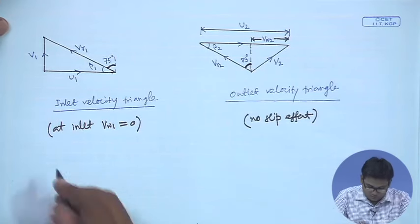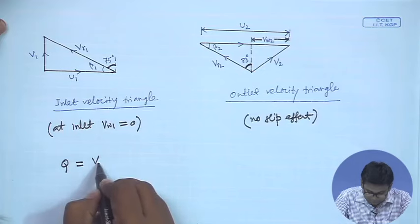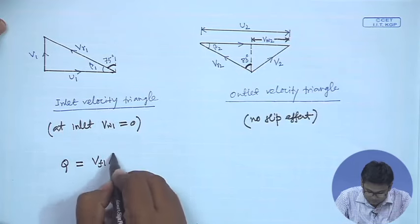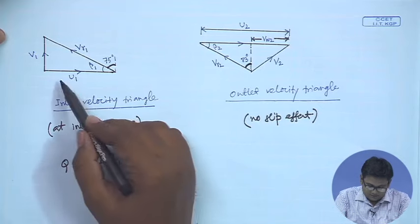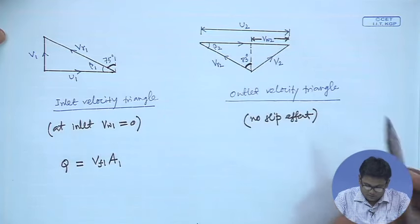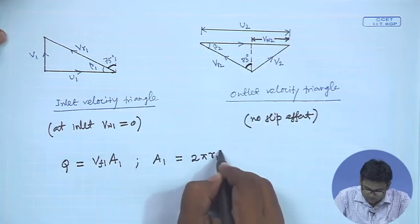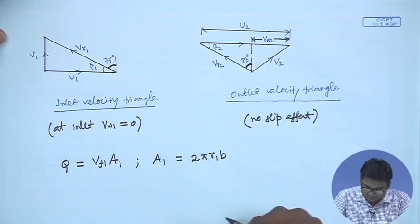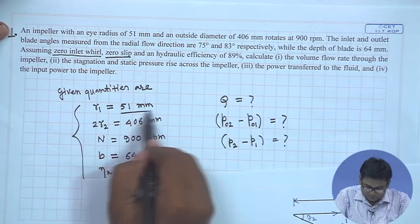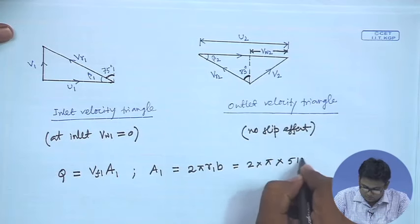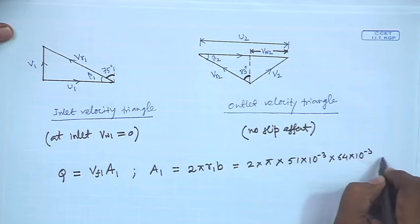With these considerations, we determine the flow rate through the pump. Flow rate Q equals the flow velocity at inlet times the cross-sectional area at inlet. Area A1 = 2π r1 × b, where b is the width of the blade. So A1 = 2π × 51×10⁻³ × 64×10⁻³ m².